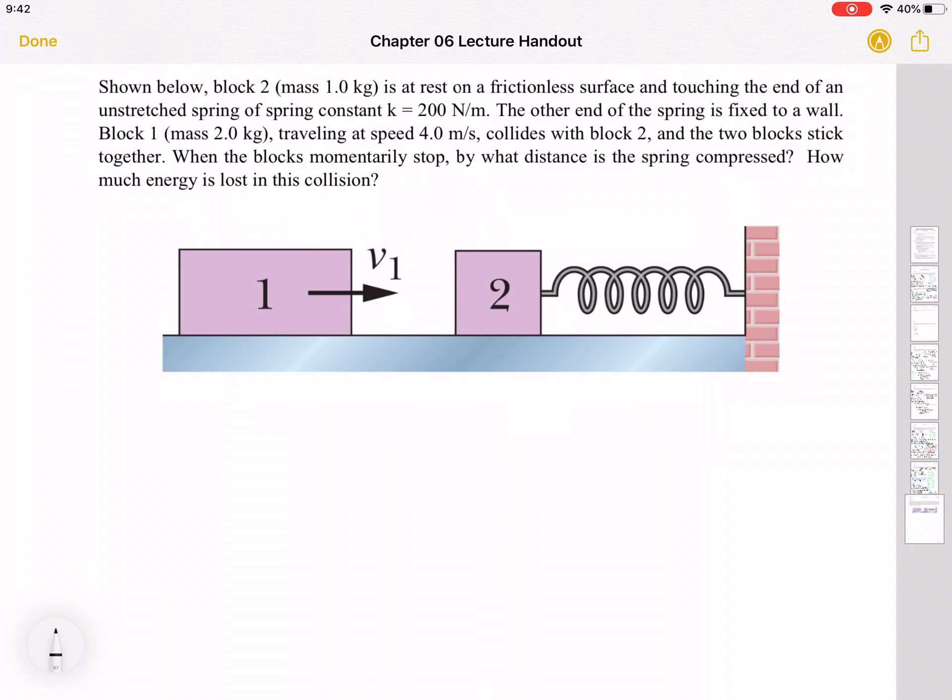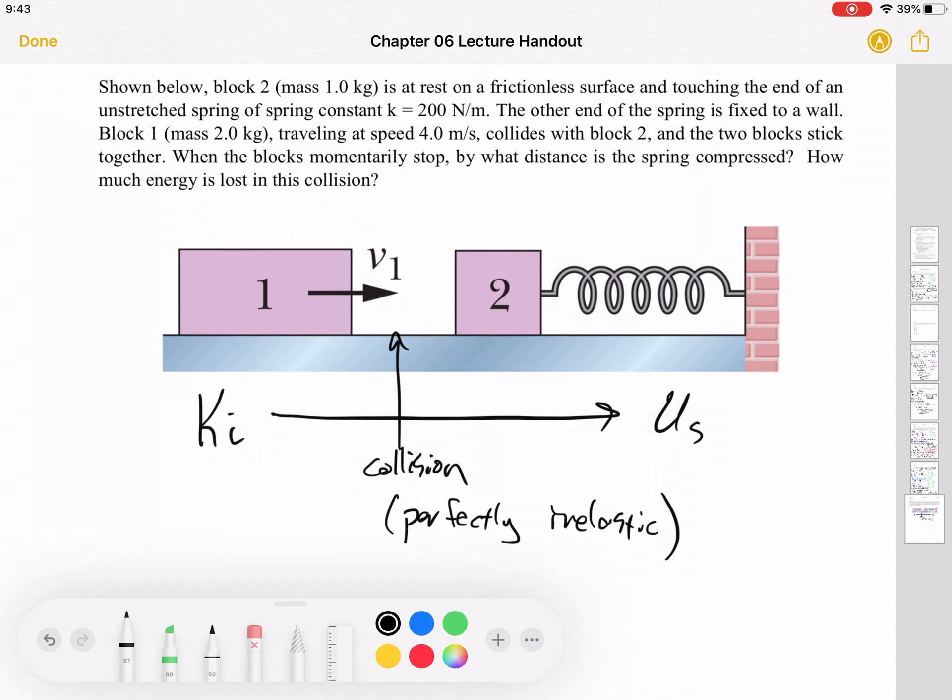It might be tempting to just use conservation of energy here and to say, well, what if this initial kinetic energy is all converted into spring potential? And I would say yes, but there's this collision right here. In fact, that collision is perfectly inelastic because they stick together. And we know that in a perfectly inelastic collision, in any inelastic collision in fact, mechanical energy is not conserved. So we can't use energy from the beginning to the end. But we can use momentum to figure out how fast blocks 1 and 2 go right after they collide. Because momentum is conserved here, but energy is not in that collision. But after that collision, when the spring is compressed, then energy is conserved.